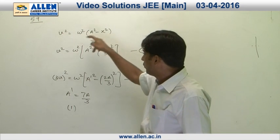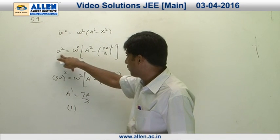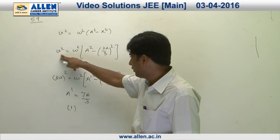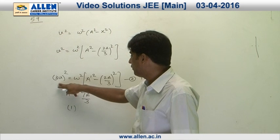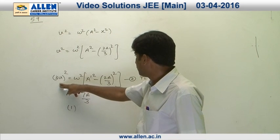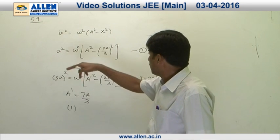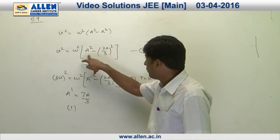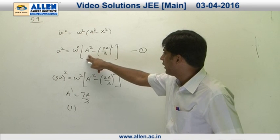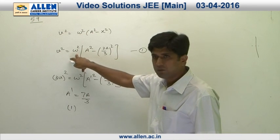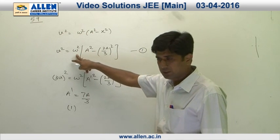In the first case, we will consider that velocity is v. Therefore, in the second case, it will be 3v as given in the question. A is the initial amplitude and omega is the angular frequency of the SHM.